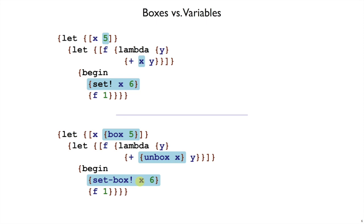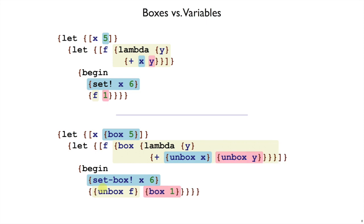But if we mechanically do this translation, it's not just x that would change. An automated process would also box the value of f because it might be changed later. And so if we box f, that means that when we call f, we need to unbox it as well. And finally, we have one more variable in this program, the y's here, where we have a reference to y, we need to unbox y.